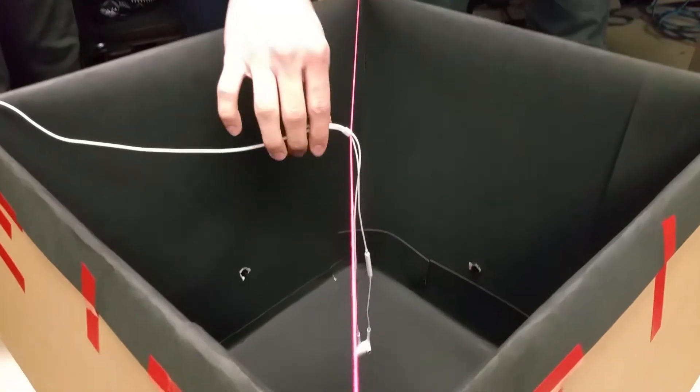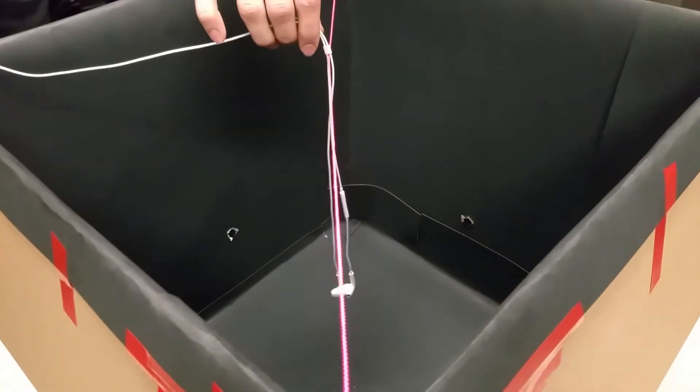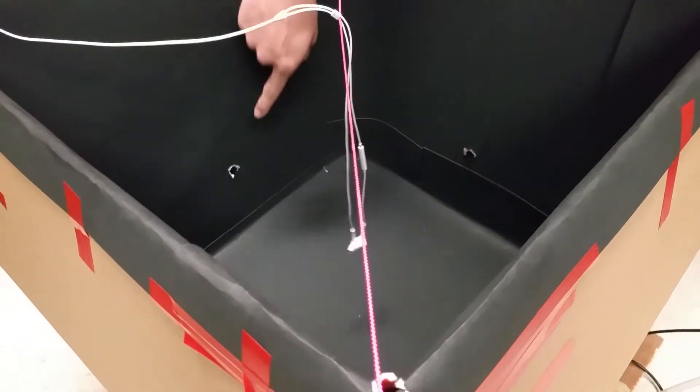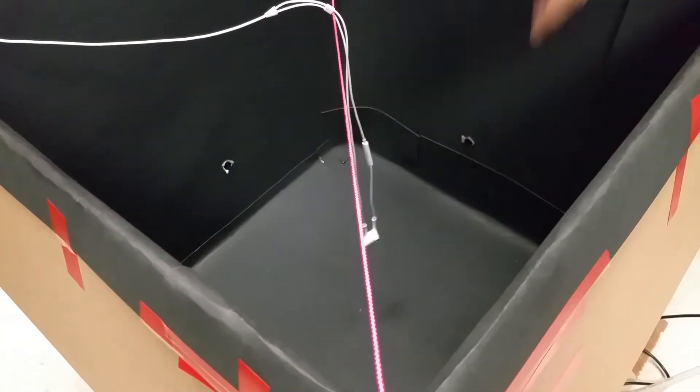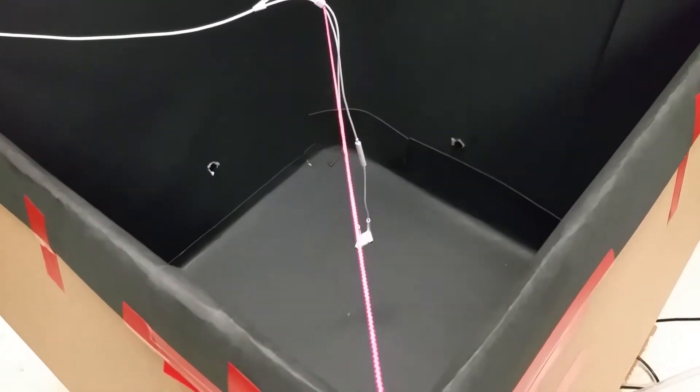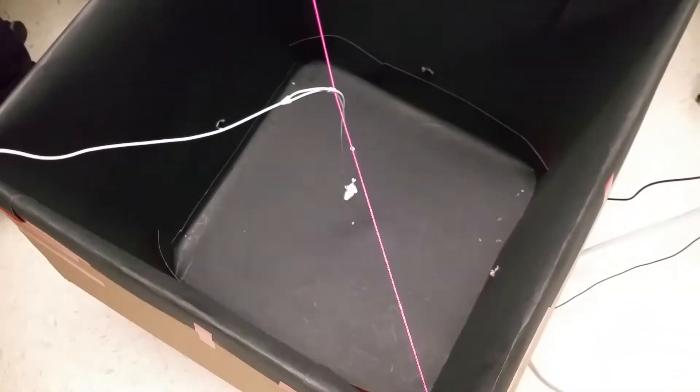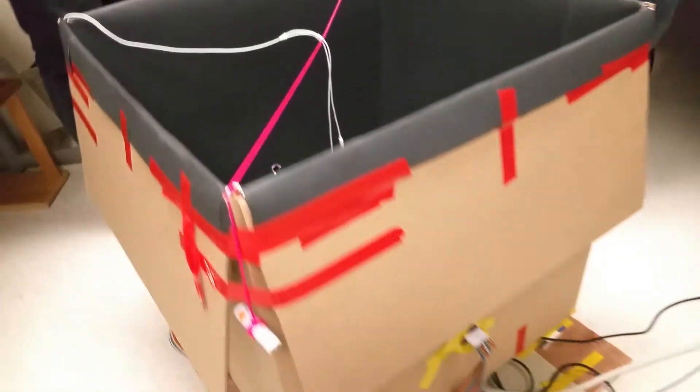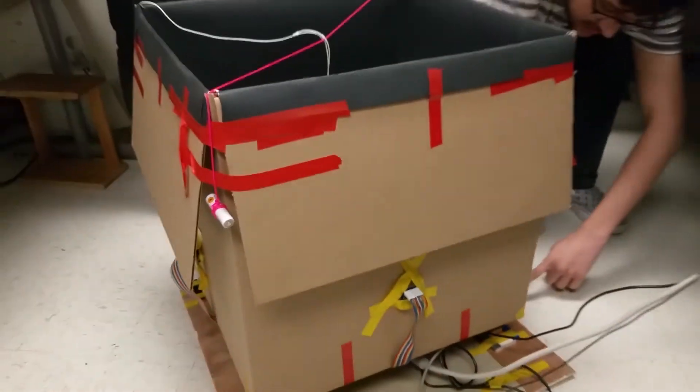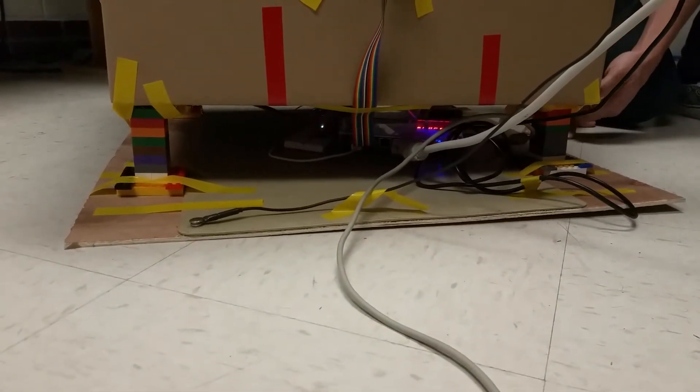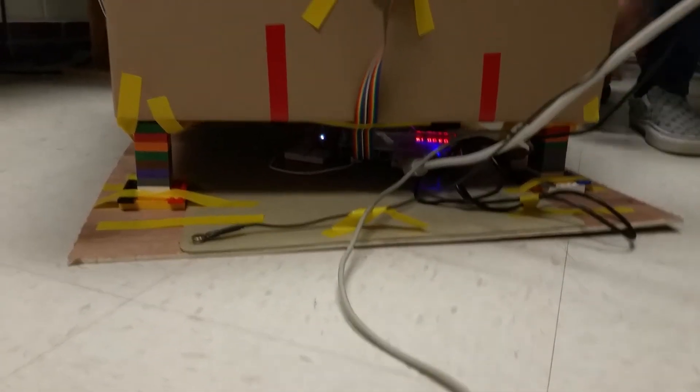So over here we have our studio and this is the object that we want to display on the holographic display right now. As you can see, there are four cameras which record the object of interest from all four sides. There's an FPGA down below which takes the videos and displays it onto the VGA.